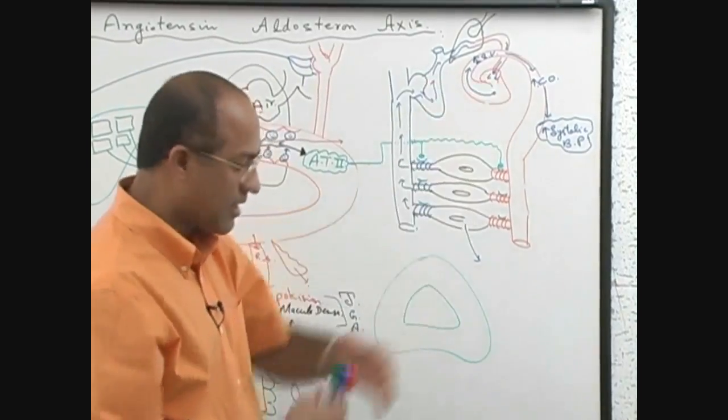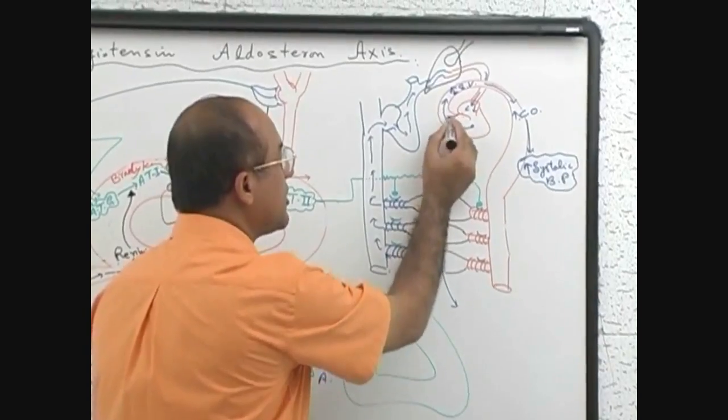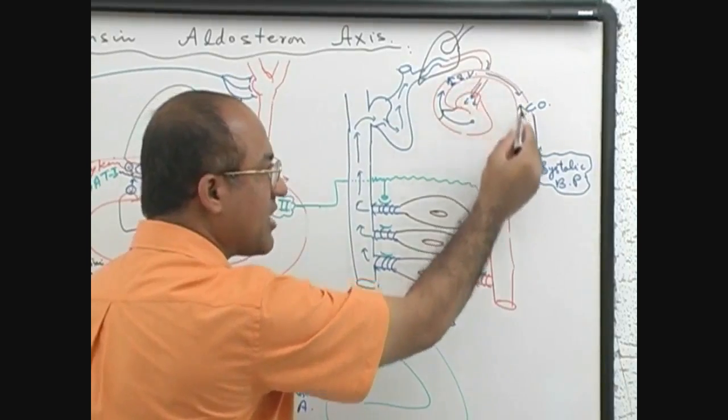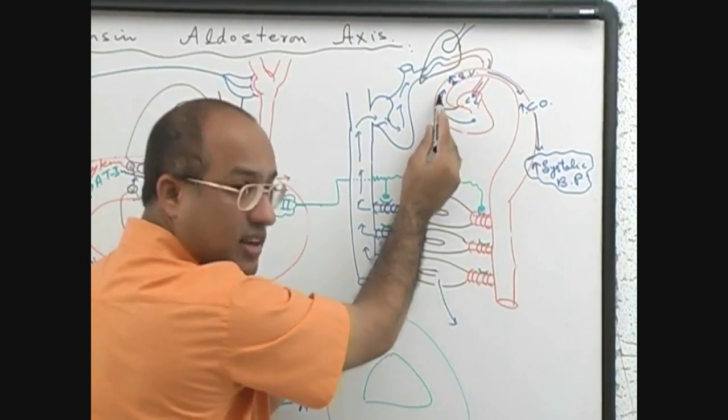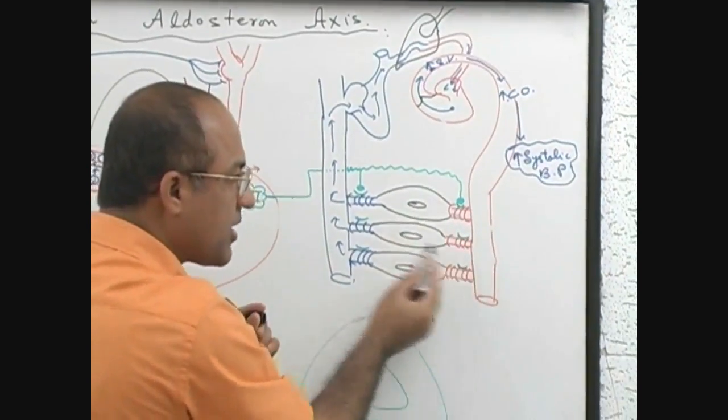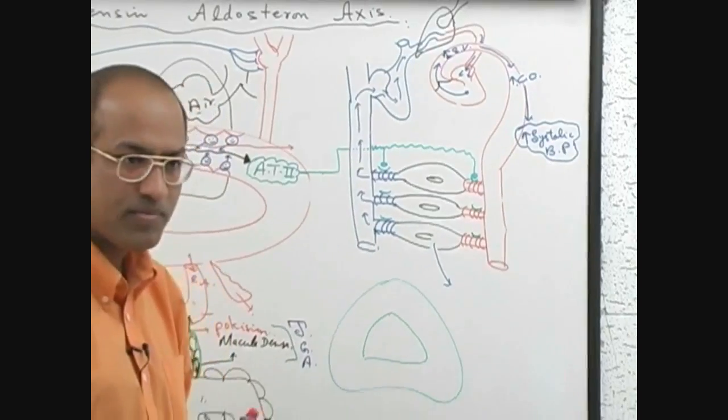During diastole, of course the aortic valve closes. Blood cannot go back. The only choice for the blood during diastole is that no blood is coming during diastole here, but whatever blood is pumped here should rush to the capillary side and venous side during diastole.